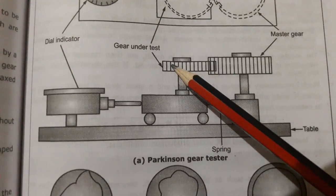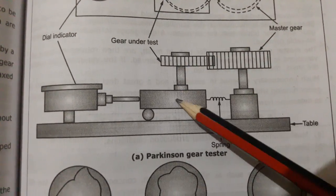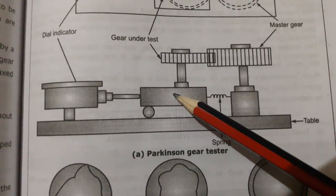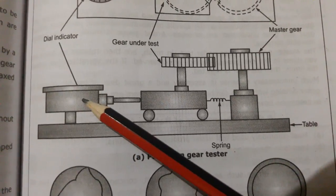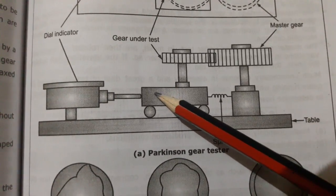This is the gear under test and this is the master gear. The gear under test is mounted on the movable carriage, and here there is a dial which measures the deflection or the movement of the gear under test, the inward or outward movement.